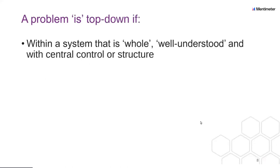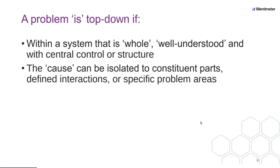A problem is top-down if it exists within a system that you can understand as whole, well understood, or with a central controller structure. All of these things are in quotes, because nothing is properly whole or well understood. But there are things that are very useful to treat as top-down — things where the cause of an effect can be isolated to constituent parts, to defined interactions, to specific problem areas.